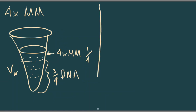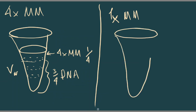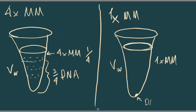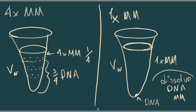The last condition was 1x master mix. To find it, you take the whole volume as your master mix. Where is the DNA? The DNA will be dried DNA. Technically it means you dissolve your DNA in the master mix itself. This may not happen in real life, but you just need to know what 1x means.